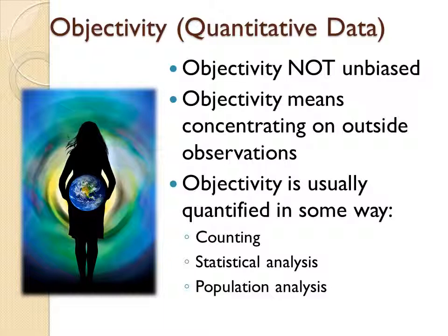Sometimes you have a smaller group that you want to study — that group becomes the population. You might survey everybody in a class or everybody involved in a certain organization. Quantification is usually attached to objective research because one of the ways we can observe while keeping distance from what we're observing is to observe in groups, which requires us to count behavior and the incidences of behavior in order to understand it.